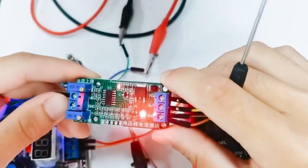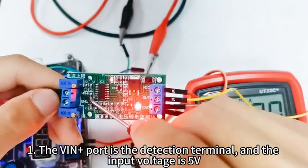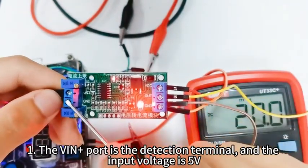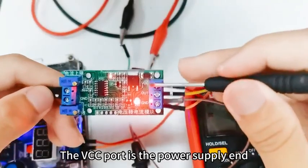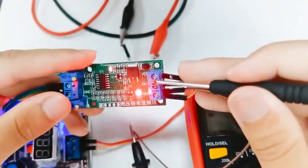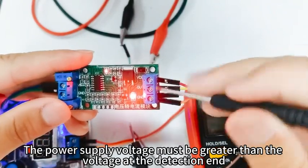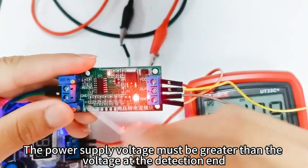Regulating steps. Step 1: The VIN port is the detection terminal and the input voltage is 5V. The VCC port is the power supply end. The power supply voltage must be greater than the voltage at the detection end.